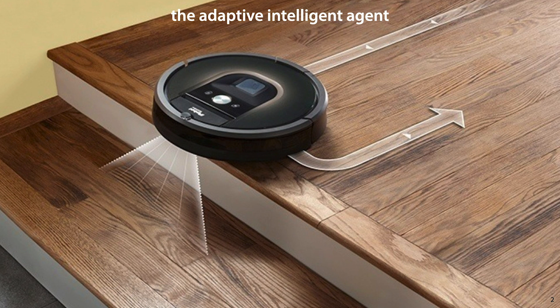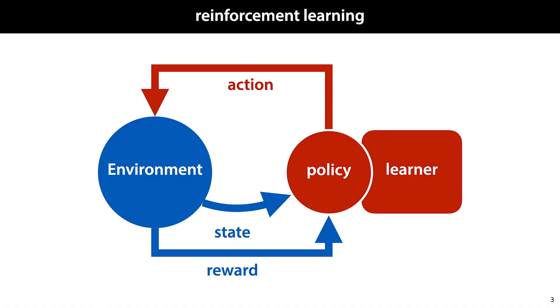Reinforcement learning is the practice of training agents — for instance robots — that interact with a dynamic world and learn while they are interacting. We should think of reinforcement learning as an abstract task, and in fact it is one of the most generic abstract tasks available. Almost any learning problem you encounter can be modeled as a reinforcement learning problem, although sometimes better ways of modeling do exist.